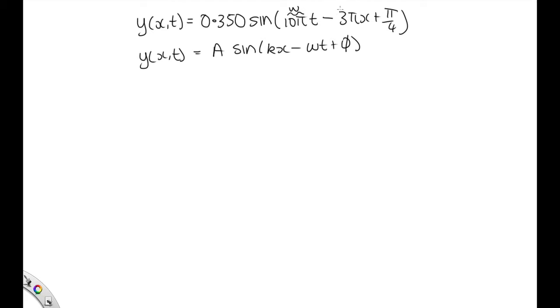This is our k. And as these have opposite signs, we know that it's traveling to the right. So traveling to the right, which is the positive x direction.